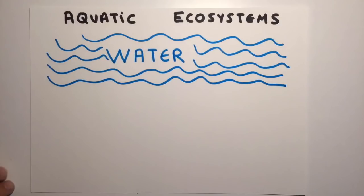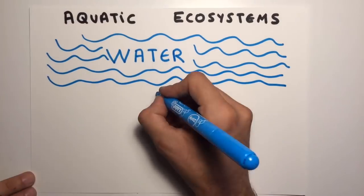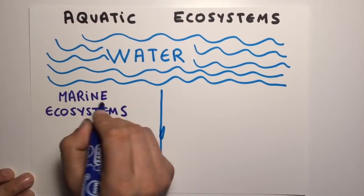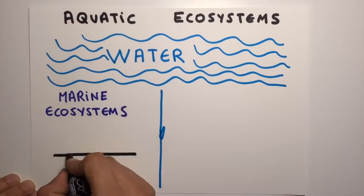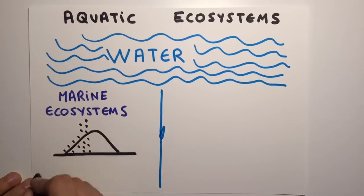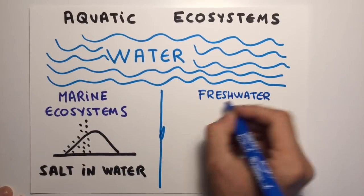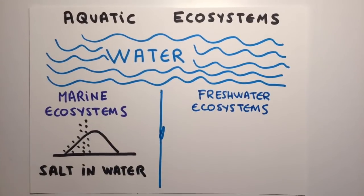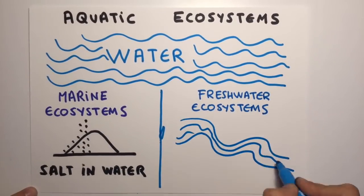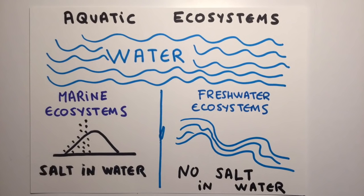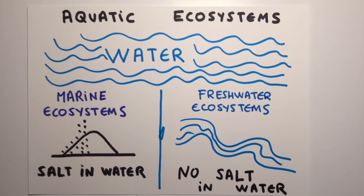Aquatic ecosystems are located in water environments. Depending on salinity, which is the amount of salt dissolved in water, there are two types of aquatic ecosystems: marine ecosystems and freshwater ecosystems.